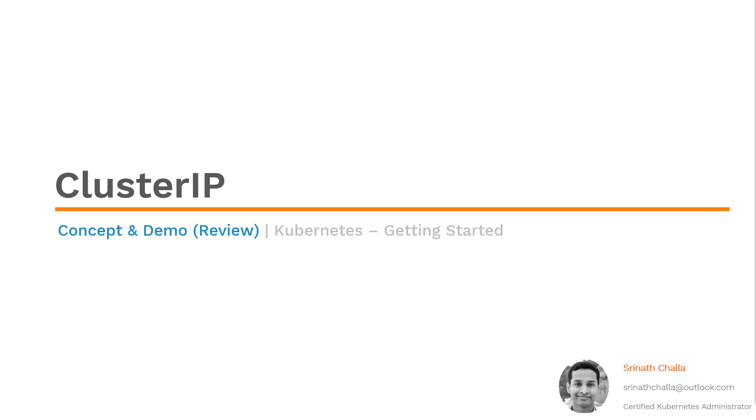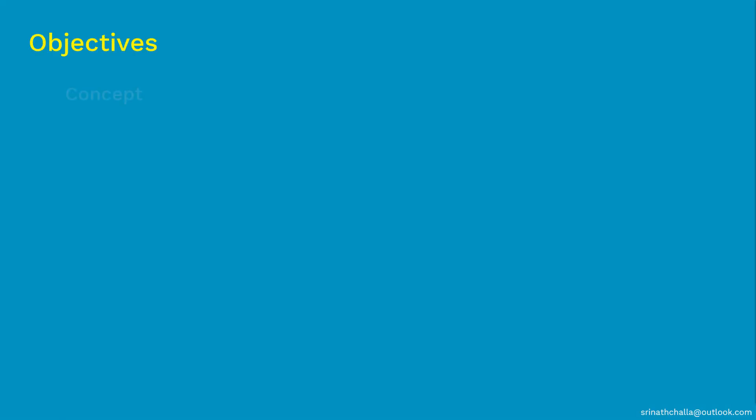This presentation is divided into two parts. In Part 1 we'll discuss the concept around ClusterIP, and in Part 2 we'll review the ClusterIP demo we are about to perform on a live Kubernetes cluster in advance, so this will help you better understand when you watch it done live. In this review demo I'll show you what goes inside the ClusterIP manifest file.